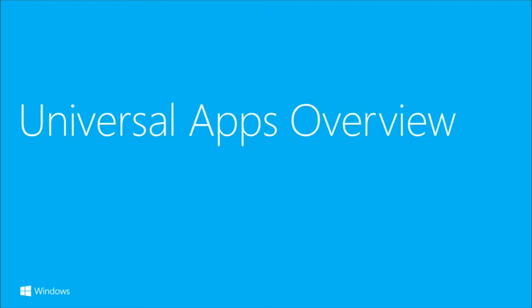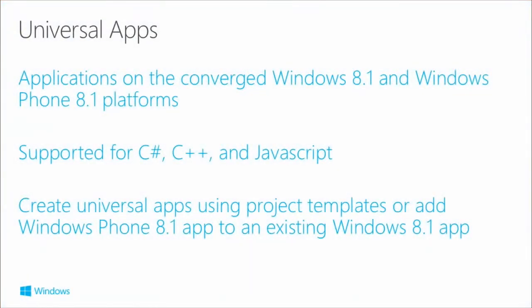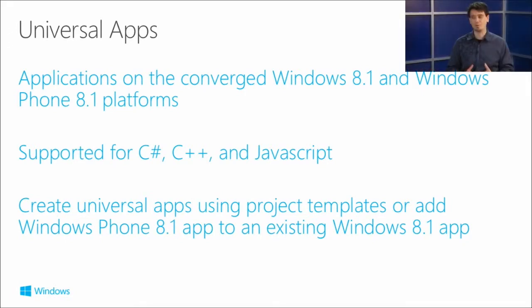Universal applications are applications on the converged Windows 8.1 and Windows Phone 8.1 platforms. We've been talking about C# this entire time, but you can also build converged applications in C++ and XAML, in JavaScript, or in C++ without XAML.